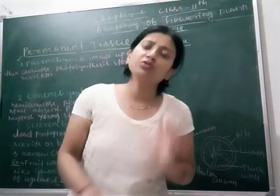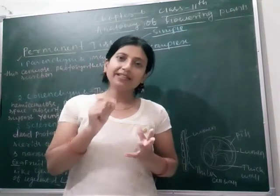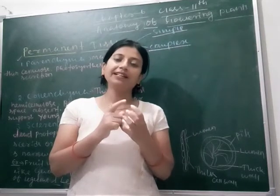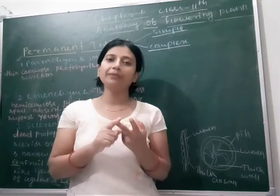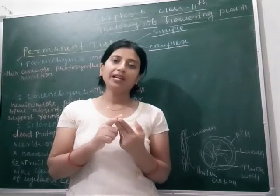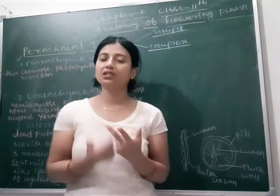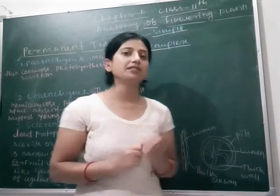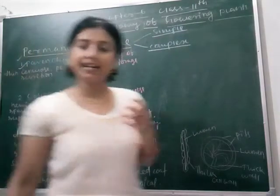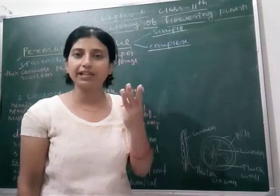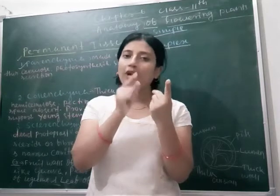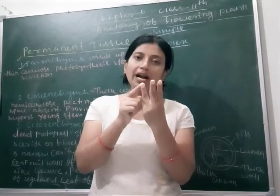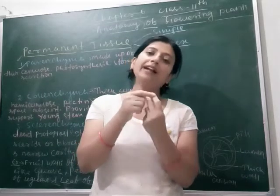Simple tissue is divided into three types: parenchyma, collenchyma, and sclerenchyma. You should practice the pronunciation because in biology you will face some words or terms that are completely new, and pronunciation is most important. You can't pronounce them in the wrong way, as it will make you habitual to wrong pronunciation. So listen carefully to how I am pronouncing these words. Simple permanent tissue is divided into three types: parenchyma, collenchyma, and sclerenchyma.